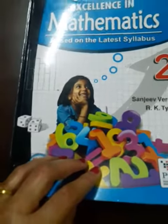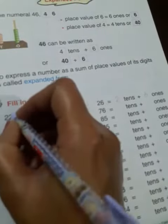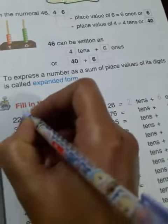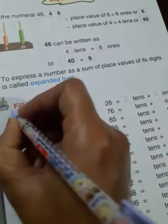Hello students, this is our maths work. Open page 23, fill in the blanks. Here 22 - this is ones and this is tens. So write here: 2 tens plus 2 ones.